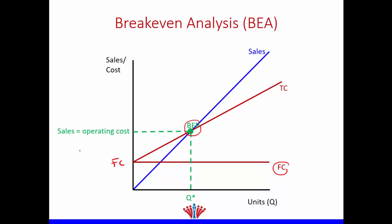Operating cost includes fixed cost and variable cost. Therefore, if sales equals operating cost, our EBIT equals zero. If we produce at a quantity below the break-even point, such as Q1, our total cost is bigger than our sales — we make a loss. If we produce at a quantity above the break-even point, such as Q2, our sales is bigger than our total cost — we make a gain.